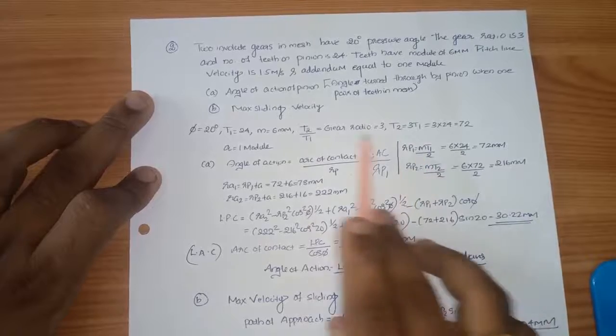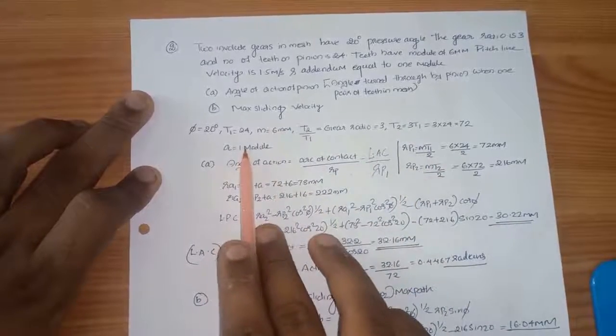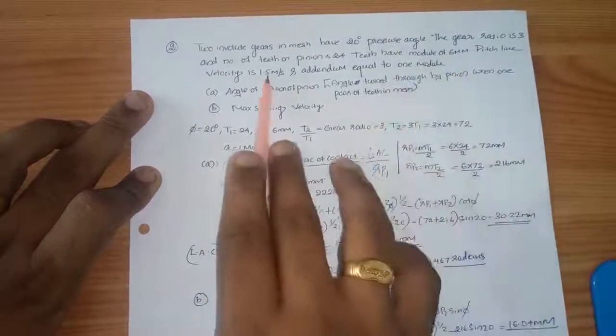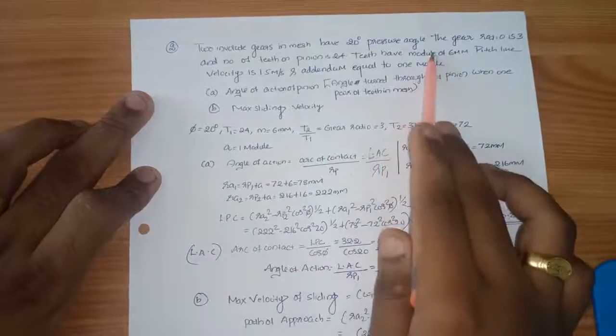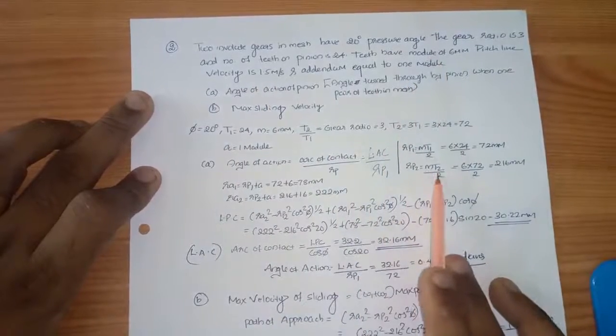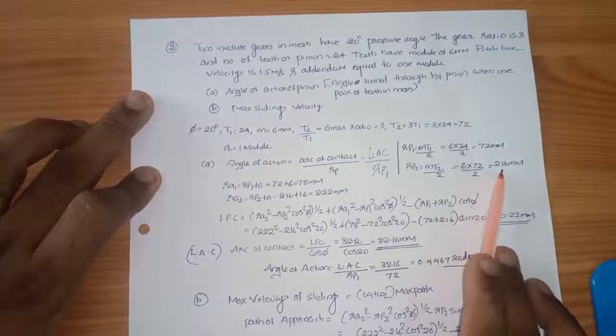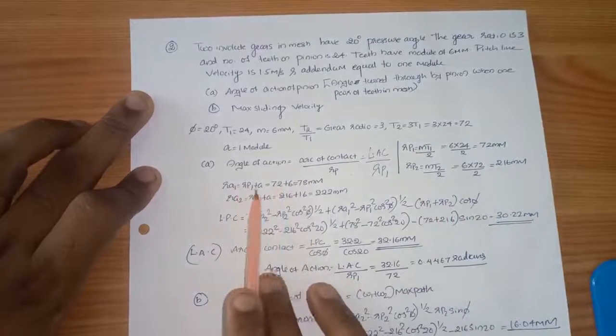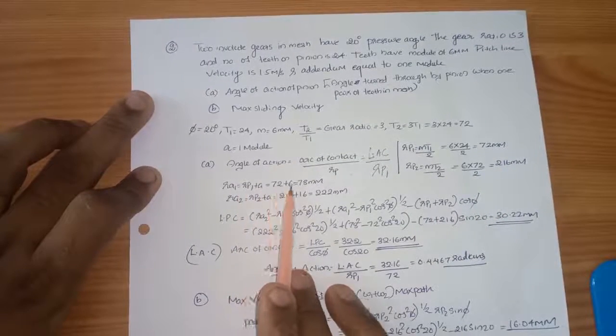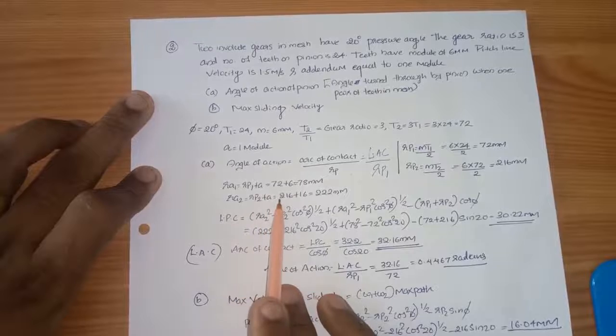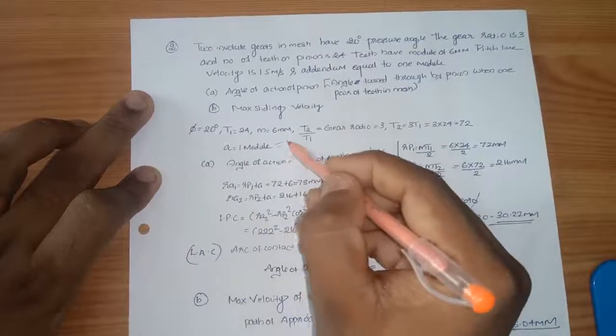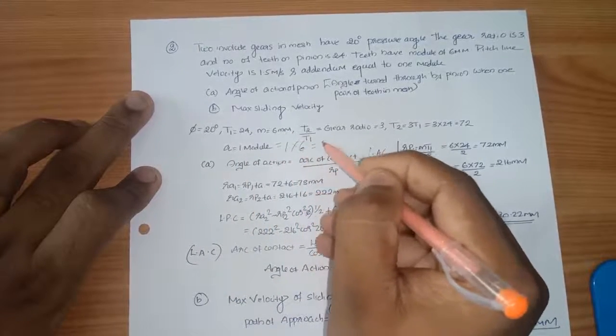M T1 M 6. T2 M rp2 M T2. Rp1 plus a, then rp2 is equal to rp2 plus a. Addendum equal to 1 into module, 1 into 6, 6 mm addendum. Then we substitute ri1 and ri2, 78, 222.